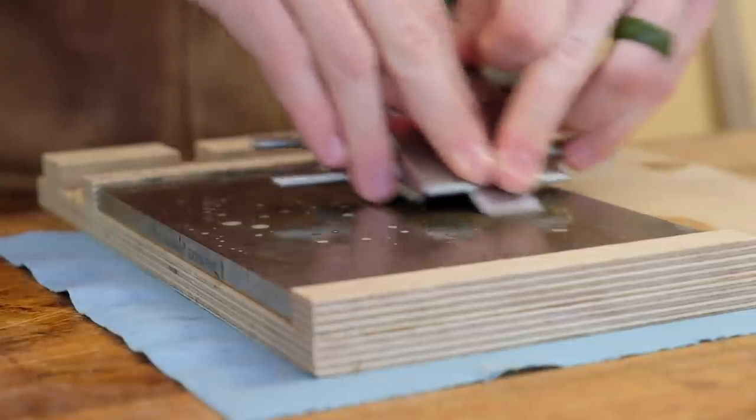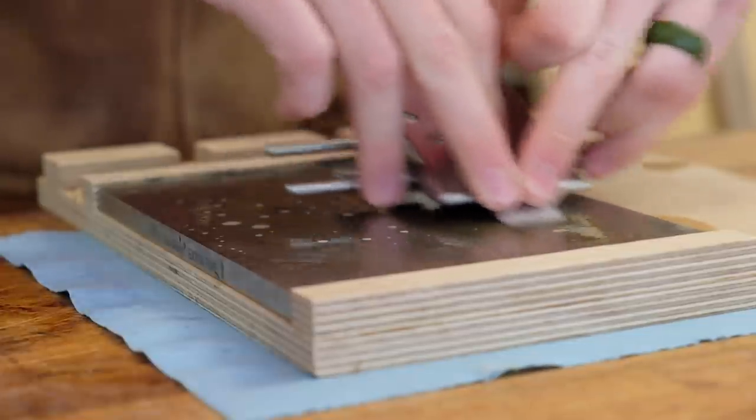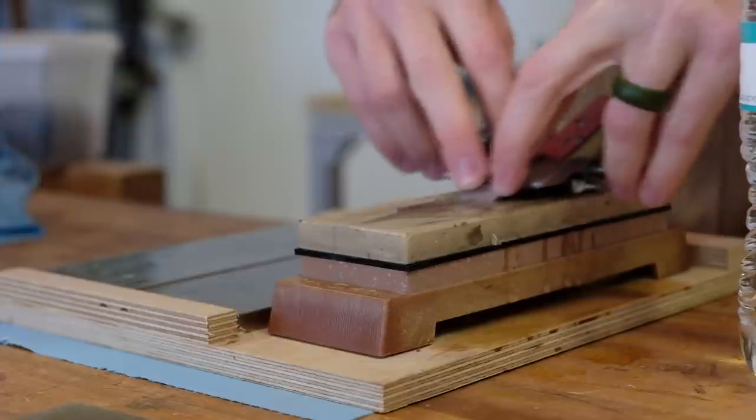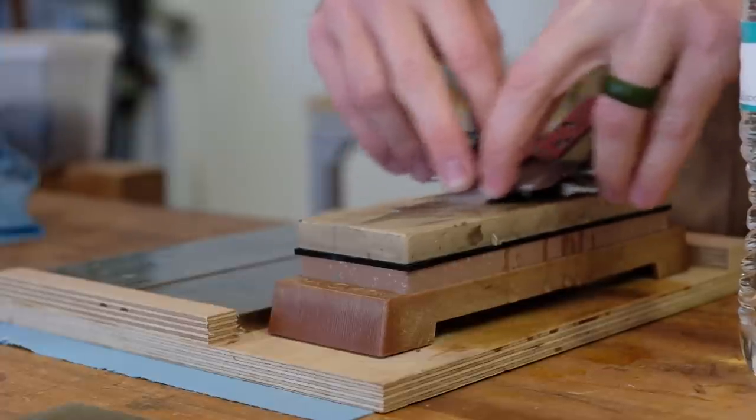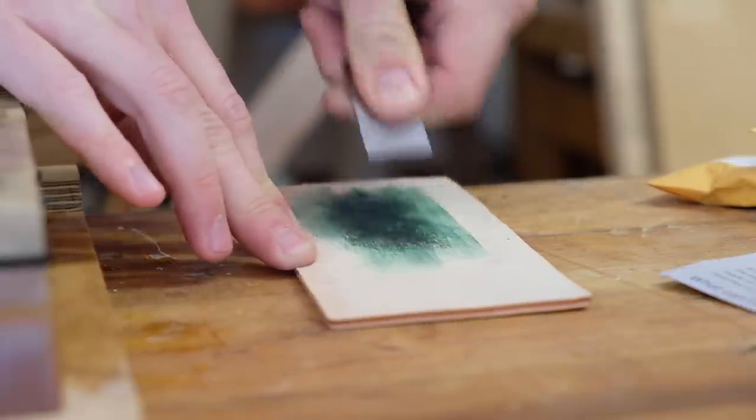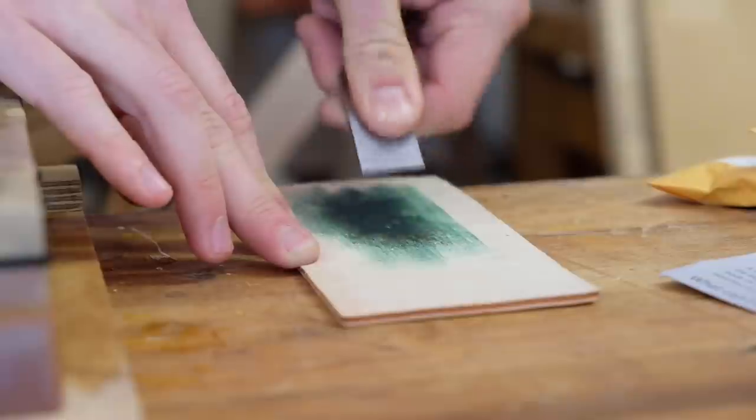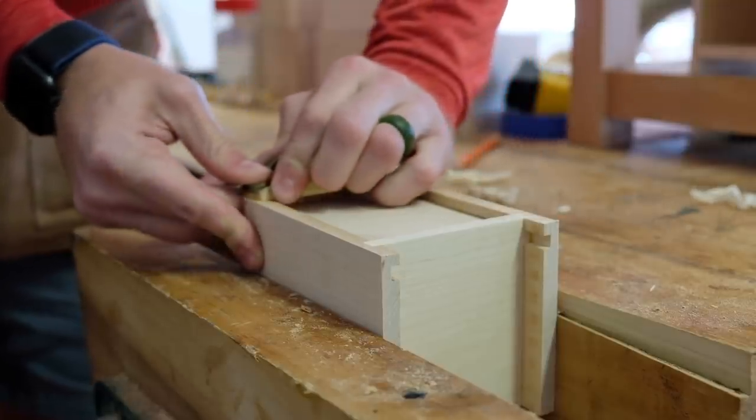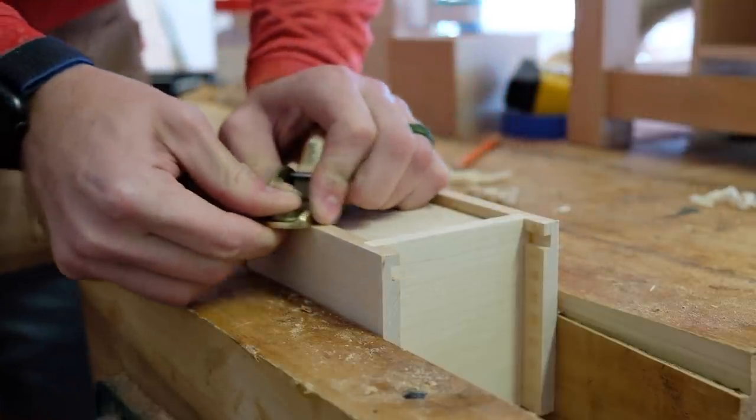For Christmas I got the little Lie-Nielsen number 101 violin makers plane which is the little brother to the 102 low angle block plane. It's great for small projects like this but first I had to get the blade ready to go. I start with a few diamond plates then move to the water stone and finally a strop. And then here we go trimming up the drawers.